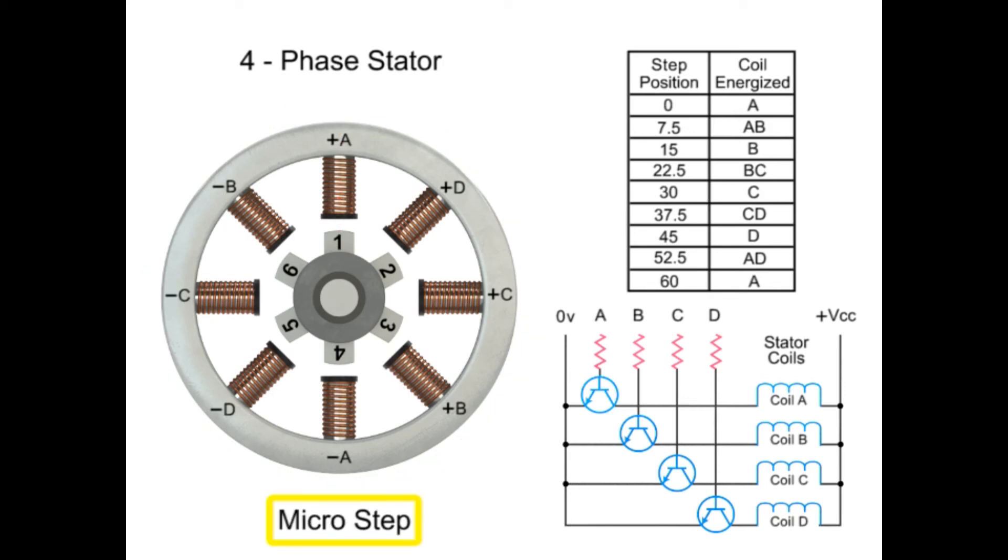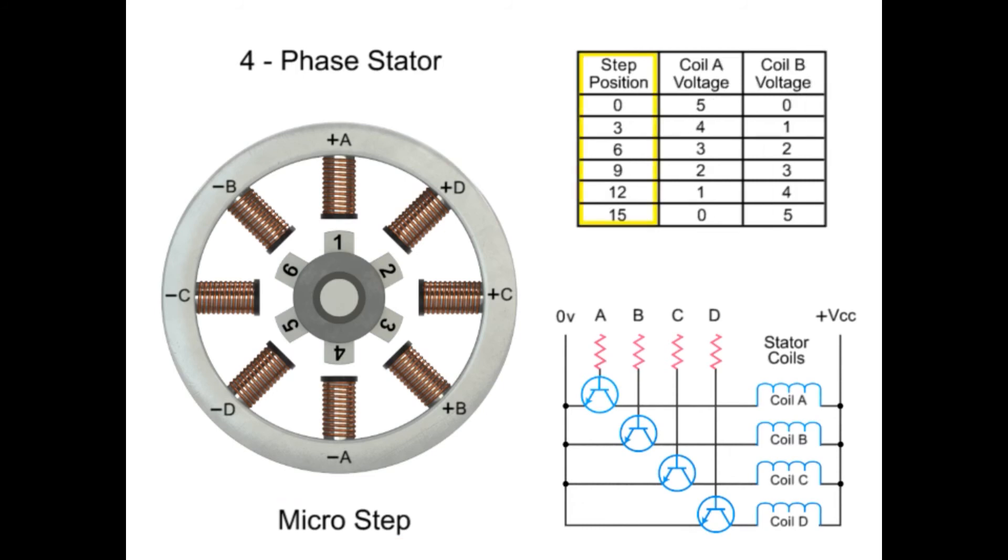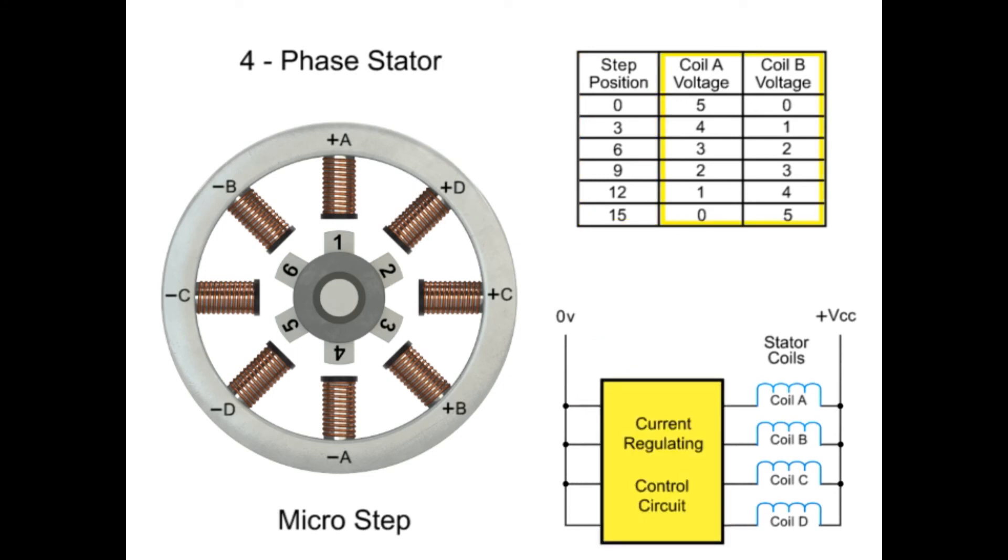Micro-stepping controls the current in the motor winding to a degree that further subdivides the number of positions between poles. To achieve micro-steps, the coils are only partially energized. As we apply a maximum voltage of 5 VDC to coil A, and a minimum voltage of 0 VDC to coil B, rotor position 1 will line up.